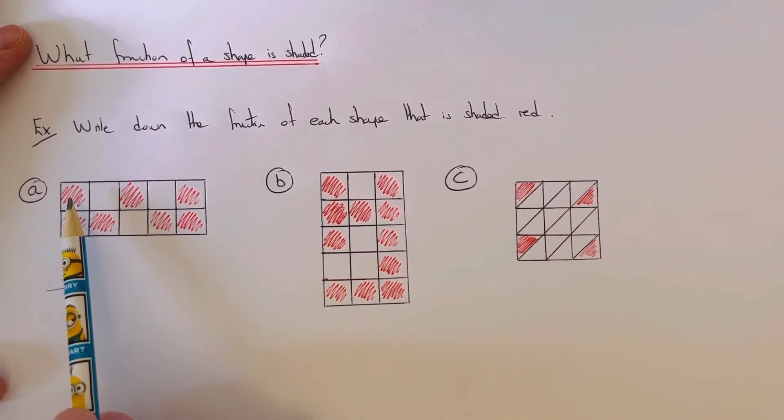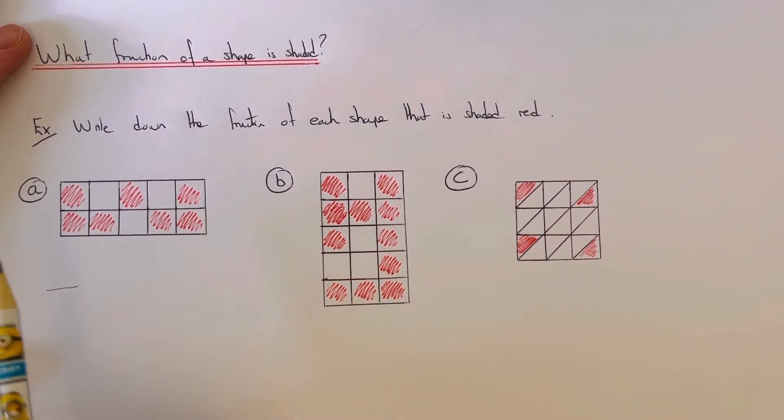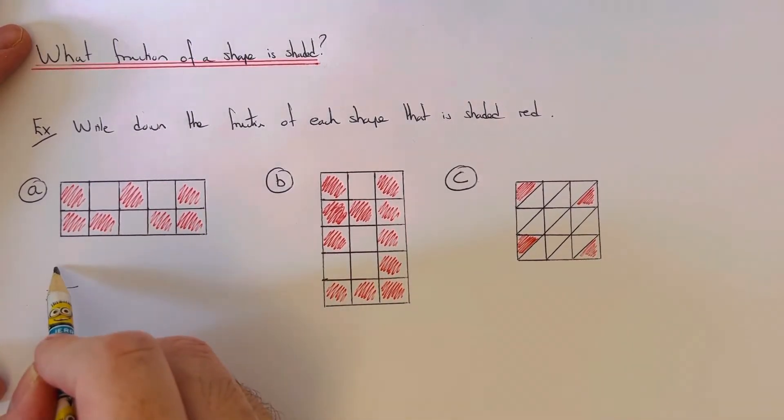We've got one, two, three, four, five, six, seven. So you put this number on the top of the fraction, which is the numerator. And then on the bottom of the fraction, count how many squares you have altogether.